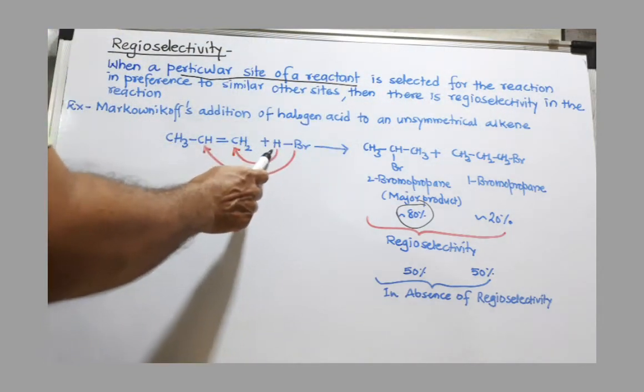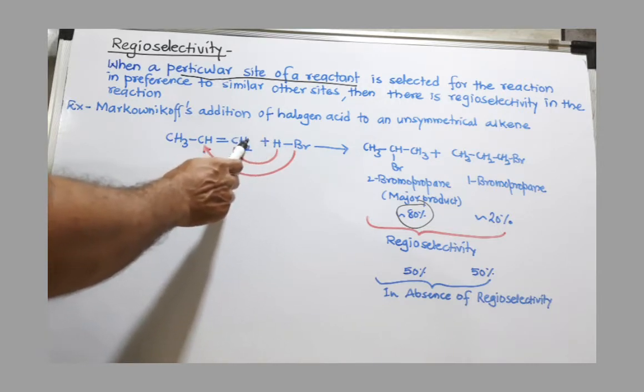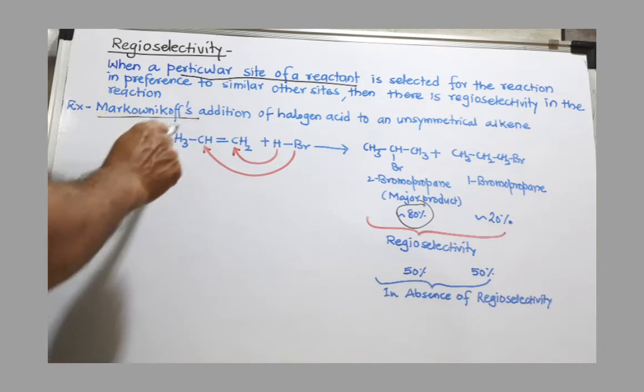How? The hydrogen usually goes to that double-bonded carbon where more number of hydrogen are present. This is according to Markovnikov's rule.